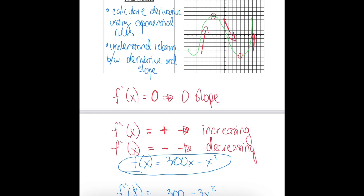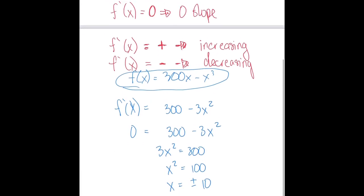Now let's take a second to think through why it's so helpful to find where slope equals zero when determining increasing and decreasing intervals. What you'll notice is that when you look at what's going on between any two points of zero slope, the graph is only doing one of two things: it's either increasing the entire time or decreasing the entire time. For example, between two zero-slope points the graph only increases, or between another pair it only decreases. So knowing where slope is zero helps us set up the exact intervals over which the graph is either just increasing or just decreasing.